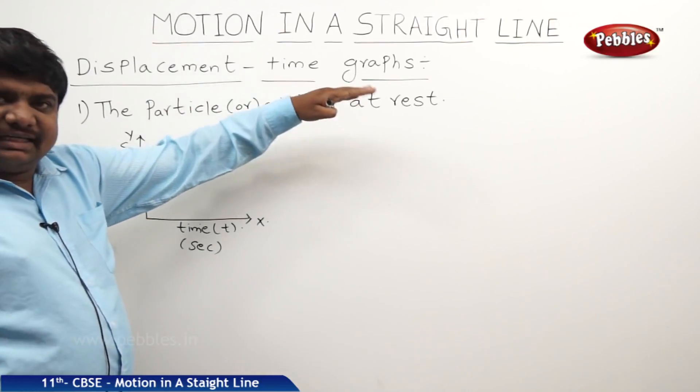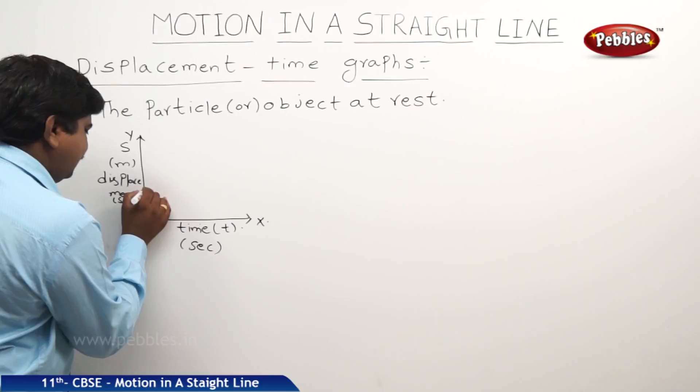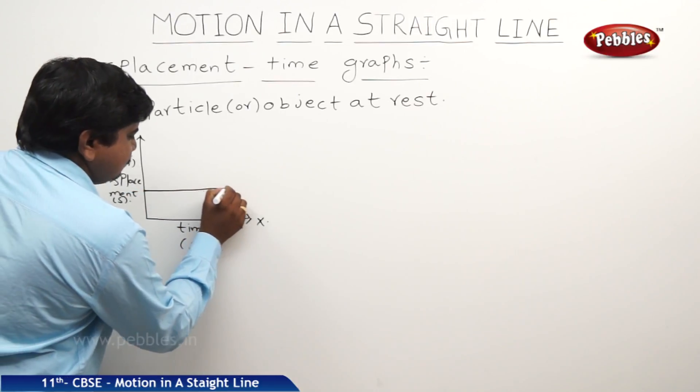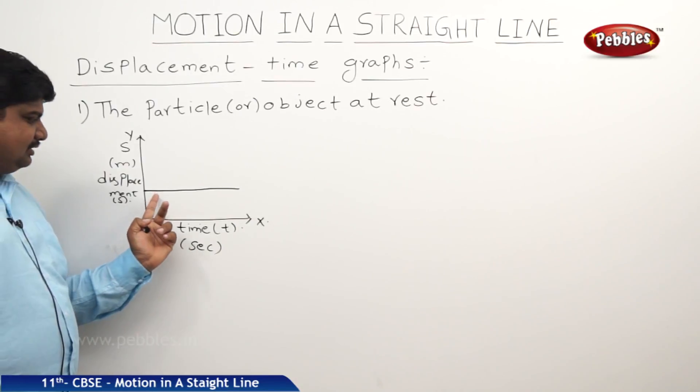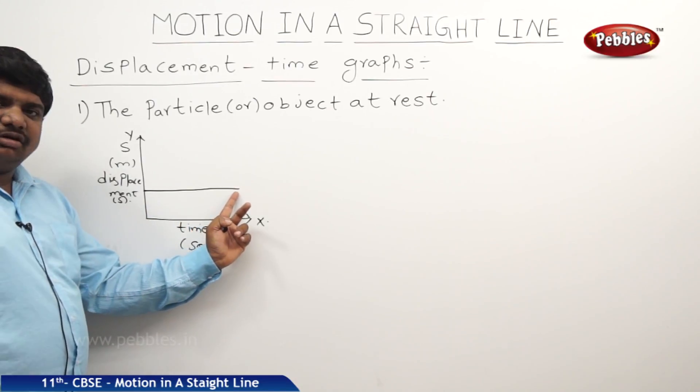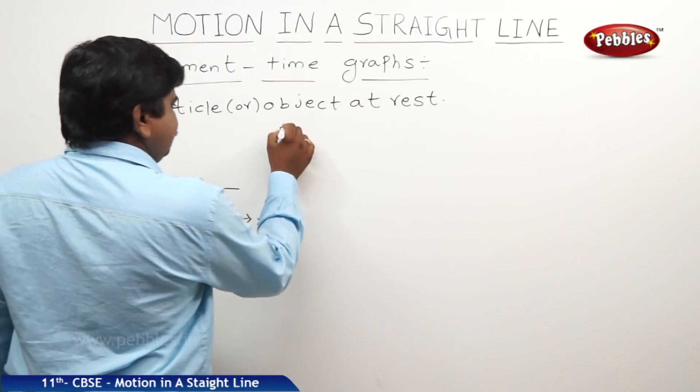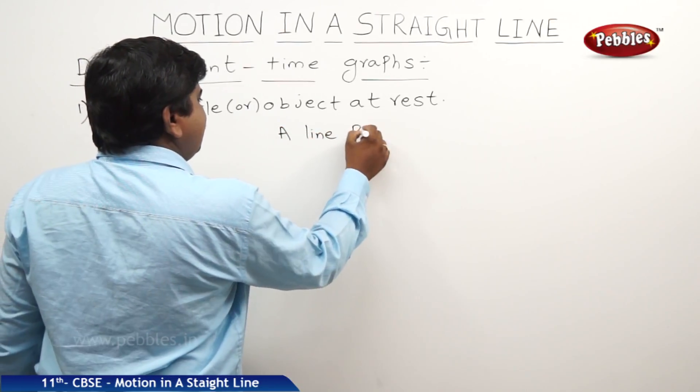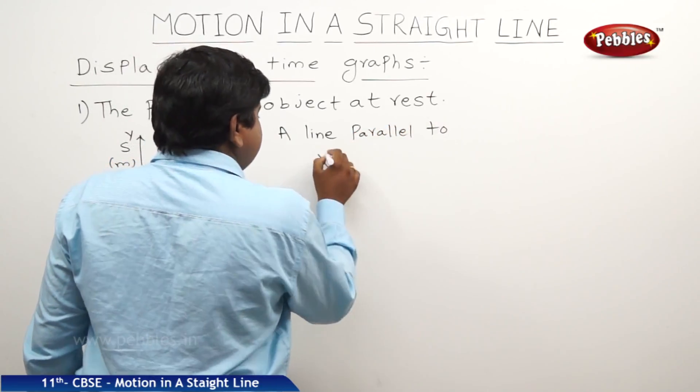If the particle is at rest or the object is at rest, the nature of the graph will be like this. It means distance by time is a constant. It means the body is not at all moving. What is the nature of the graph? A line parallel to x axis.